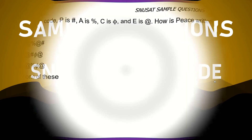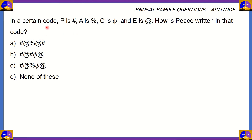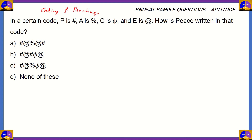So here comes our first question. In a certain code, P is hashtag, A is percentage, C is phi, and E is at. You need to find out how PEACE is written in that code. The question we're doing here is a form of coding and decoding. We're given a word and a certain code, and we're asked to write the word PEACE in the given code.